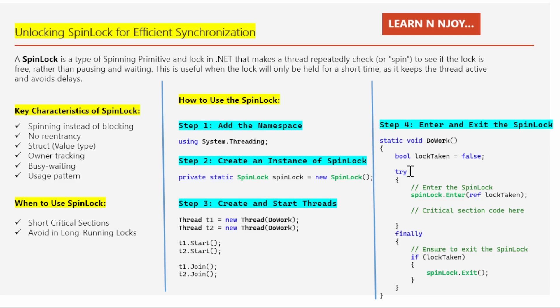In the try block, the code for entering the spin lock is written: spinLock.Enter(ref lockTaken). With this line the thread tries to acquire the spin lock. If the lock is available, lockTaken becomes true. If the lock is held by another thread, the current thread spins — meaning it continuously checks until the lock is released.